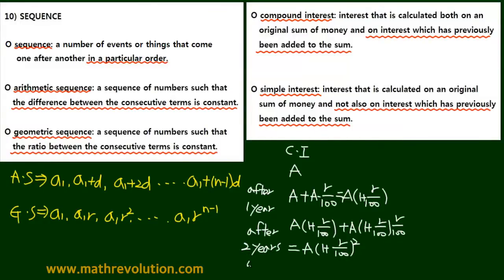In other words, after N years, you're going to have A times 1 plus R over 100 raised to the power of N.